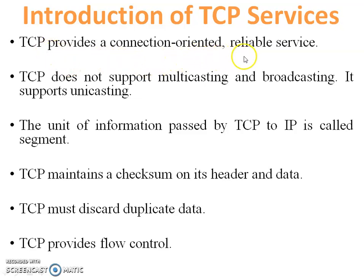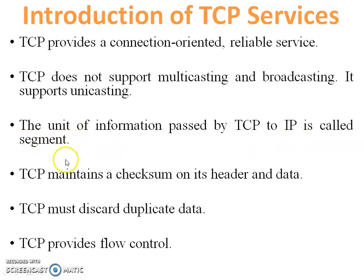TCP provides connection-oriented and reliable services. TCP does not support multicasting and broadcasting — it supports unicasting only. The unit of information passed by TCP to IP is called a segment. TCP maintains a checksum on its header and data, must discard duplicate data because it uses sequence numbers, and provides flow control.